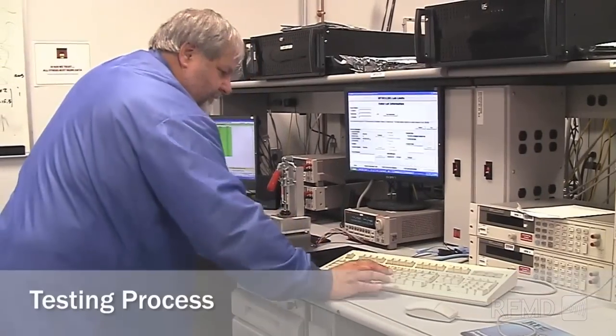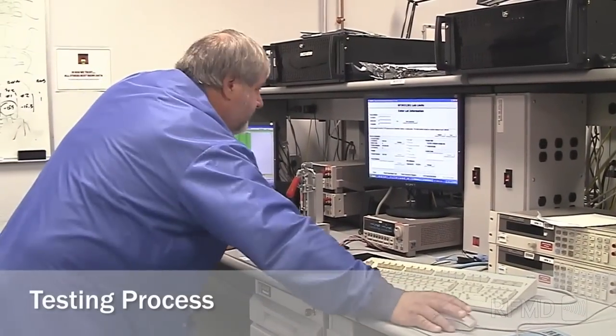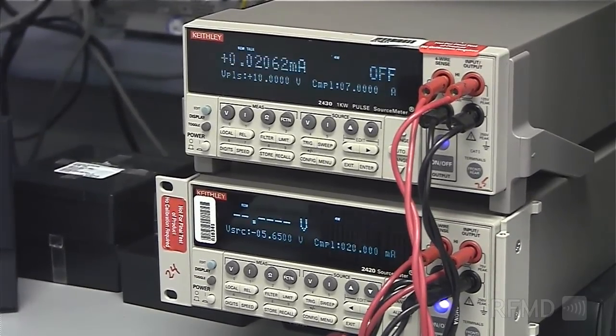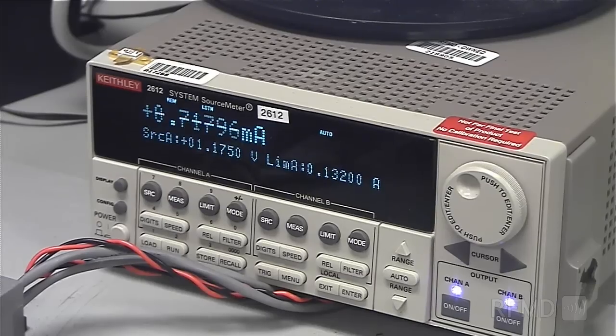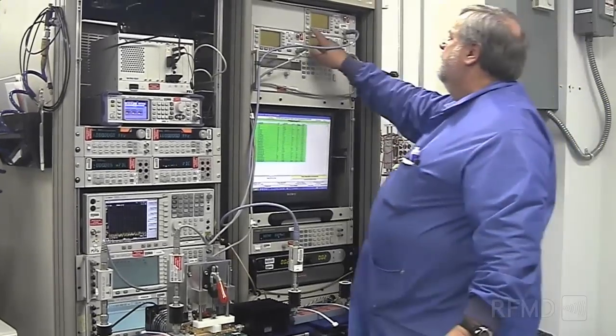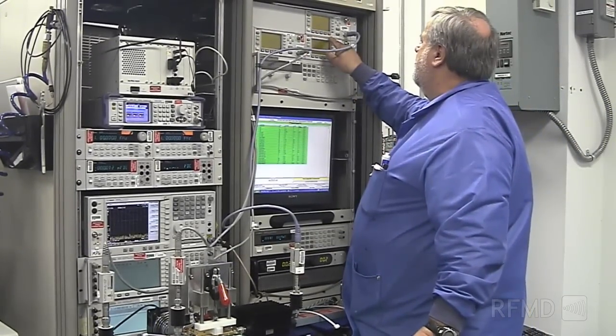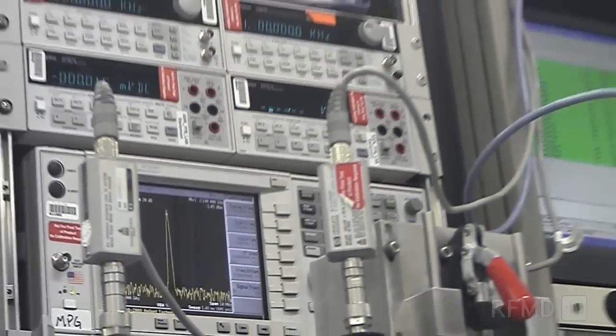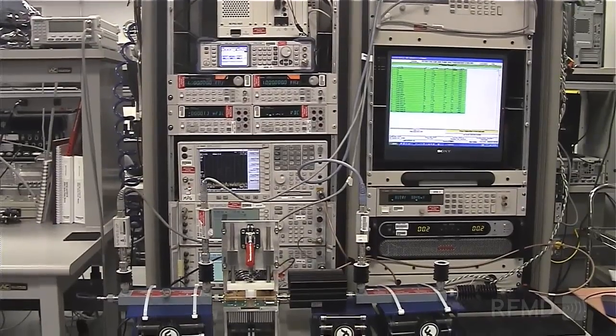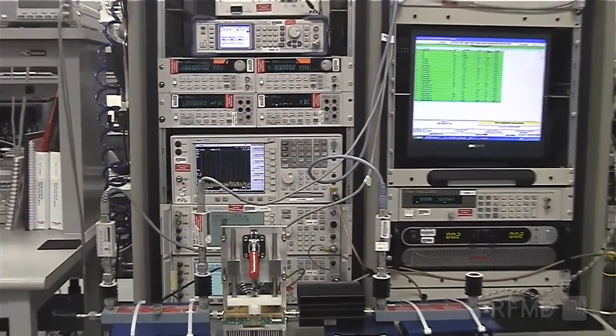Once part marking is complete, the parts move to final production. RFMD's testing facility has the capability to handle multiple packaging outlines and support both CW and pulse measurements. As the parts move through this area, multiple test centers will test the device for critical DC and RF power parameters such as power, gain, and linearity. All parts are 100% production tested and inspected.